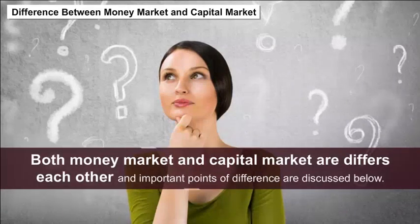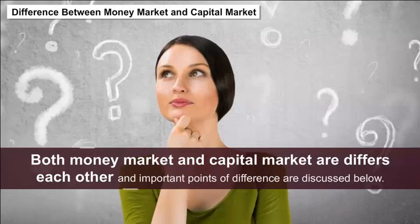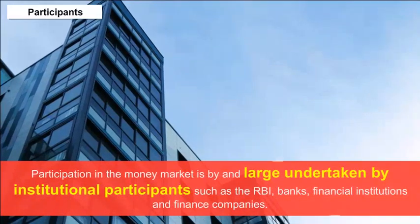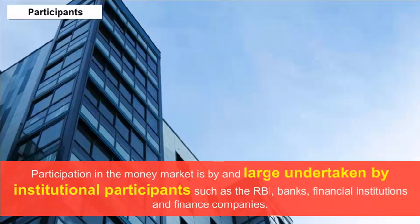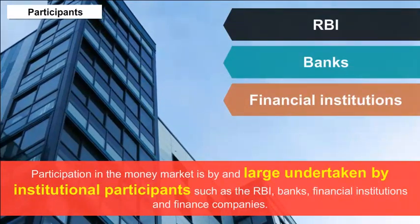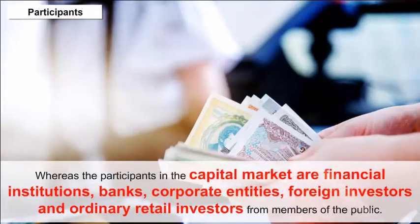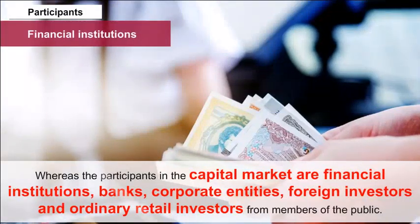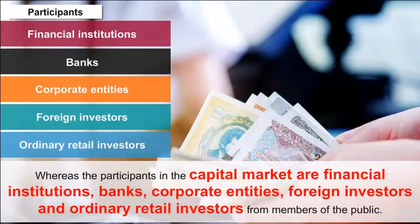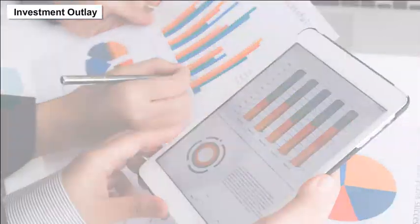Differences between money market and capital market: Participants — participation in the money market is largely undertaken by institutional participants such as the RBI, banks, financial institutions and finance companies, whereas participants in the capital market include financial institutions, banks, corporate entities, foreign investors and retail investors from the general public.